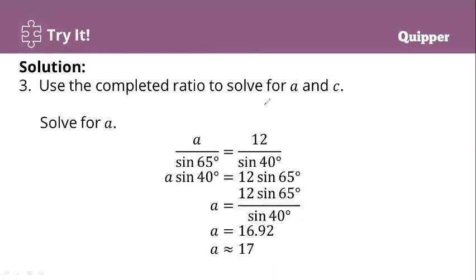Here, use the completed ratio to solve for a and c. I'll start with solving for a. We'll just take two ratios: a over sine 65 degrees and 12 over sine 40 degrees. We get its cross product, a times sine 40, and 12 times sine 65 degrees. From there, we take the value of a by dividing both sides by sine 40. We have now the value of a, which is 12 sine 65 degrees over sine 40 degrees. The result will be 16.92, approximately 17 units.